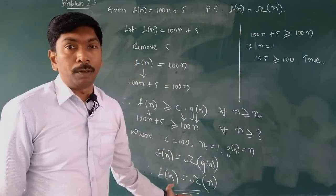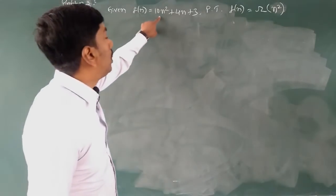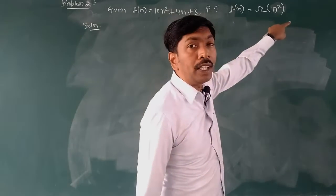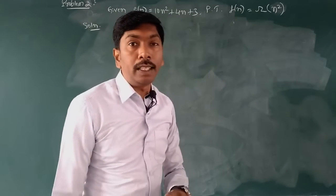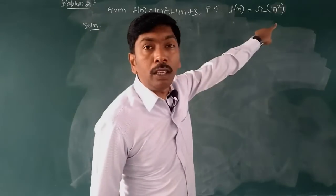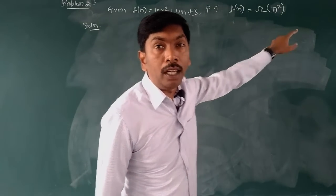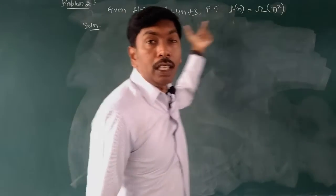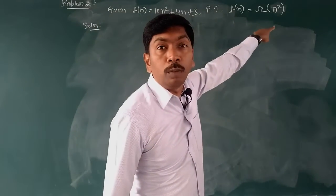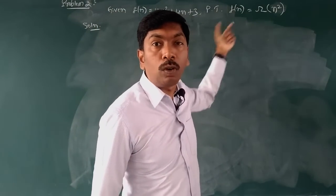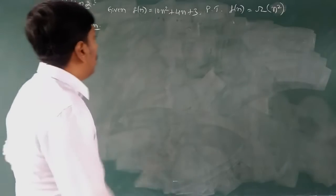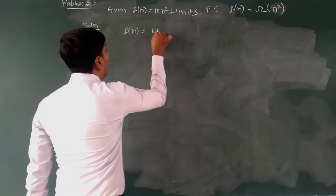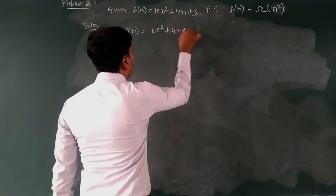They are given: f(n) = 10n² + 4n + 3, prove that f(n) = Ω(n²). Here we have to prove that f(n) = Ω(n²). So the solution starts: f(n) = 10n² + 4n + 3.